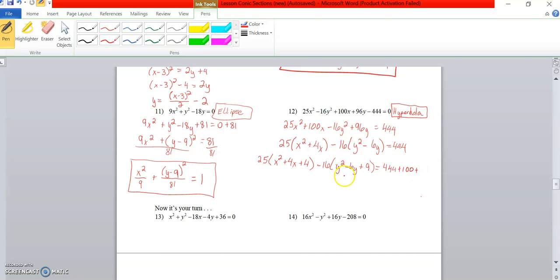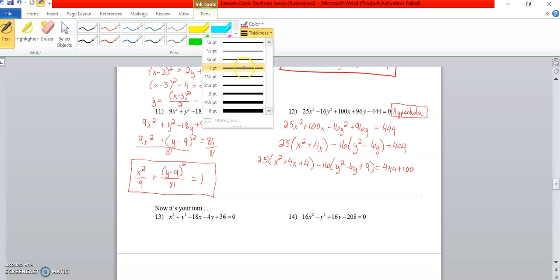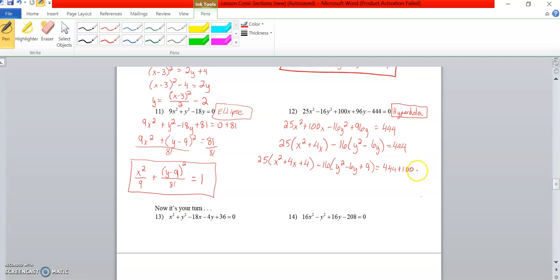And here we have to subtract. 16 times 9, if you know your squares, that's just minus 144. So now we can take and actually write these out as squares. 25 times the quantity x plus 2 squared, minus 16 times y minus 3 squared, and if you take 444 plus 100 minus 144, we end with just plain 400.